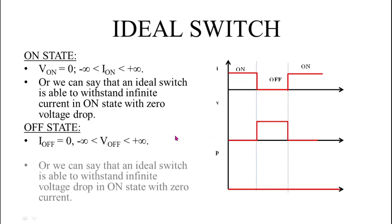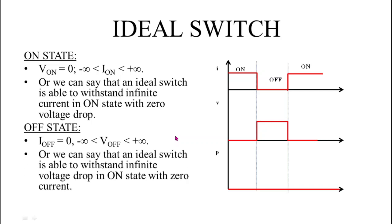The waveform shows that during the on state, current is finite and voltage drop is zero, while during the off state, the current is zero and voltage drop is finite.